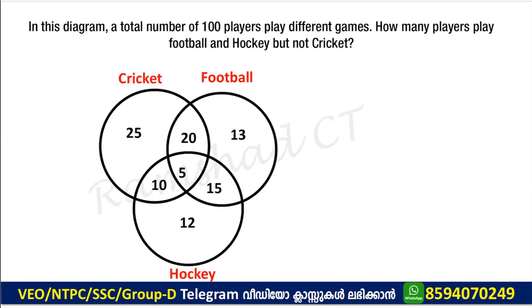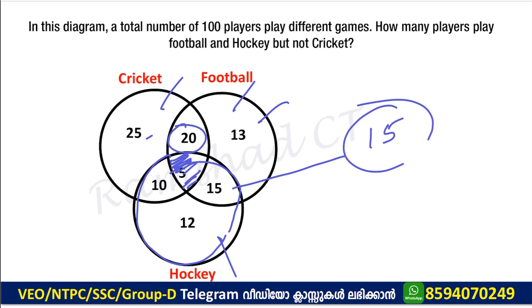Let's take a look at the next problem. A total number of 100 players play different games. How many players play football and hockey but not cricket? Football players can play hockey.